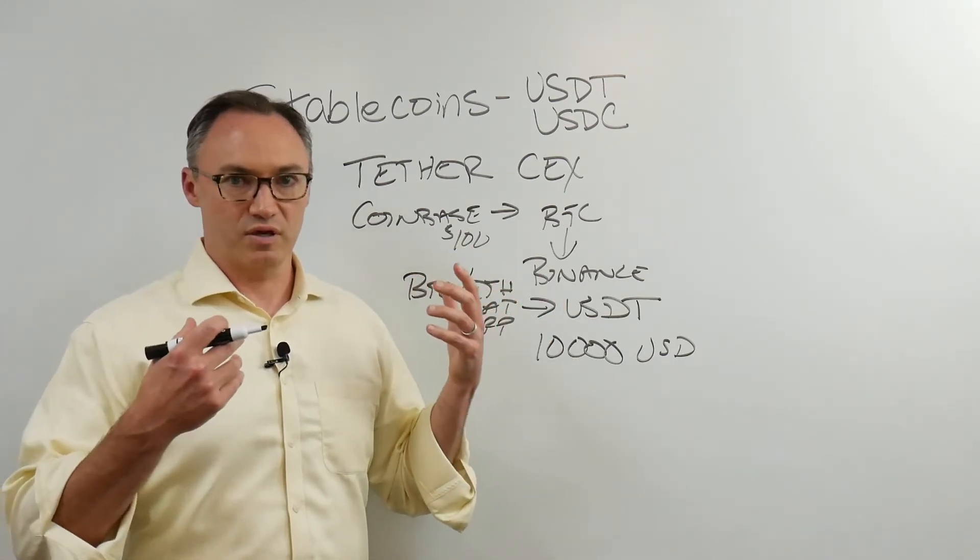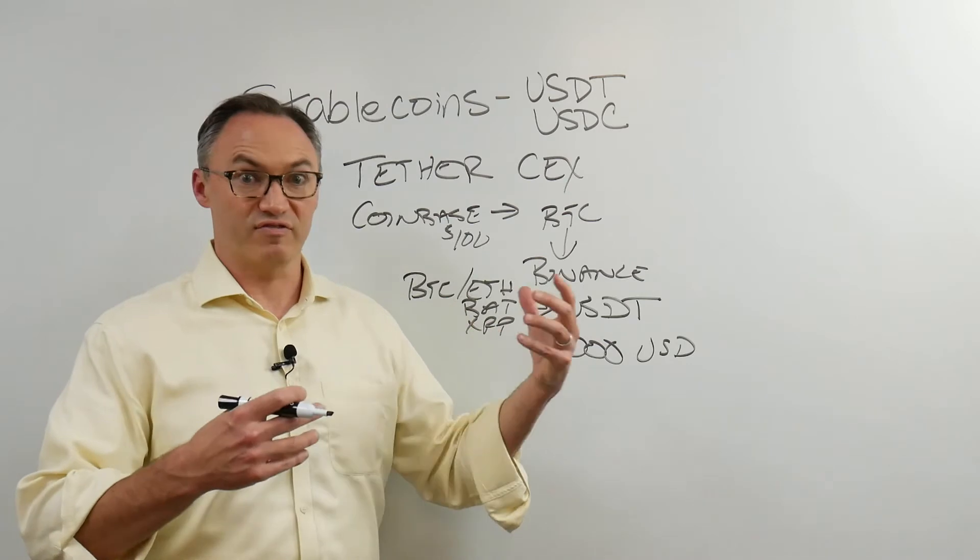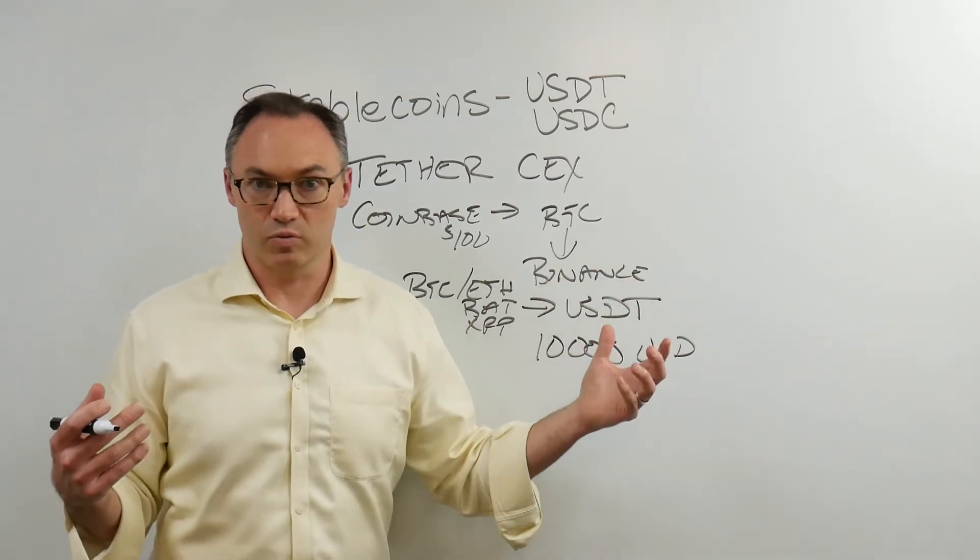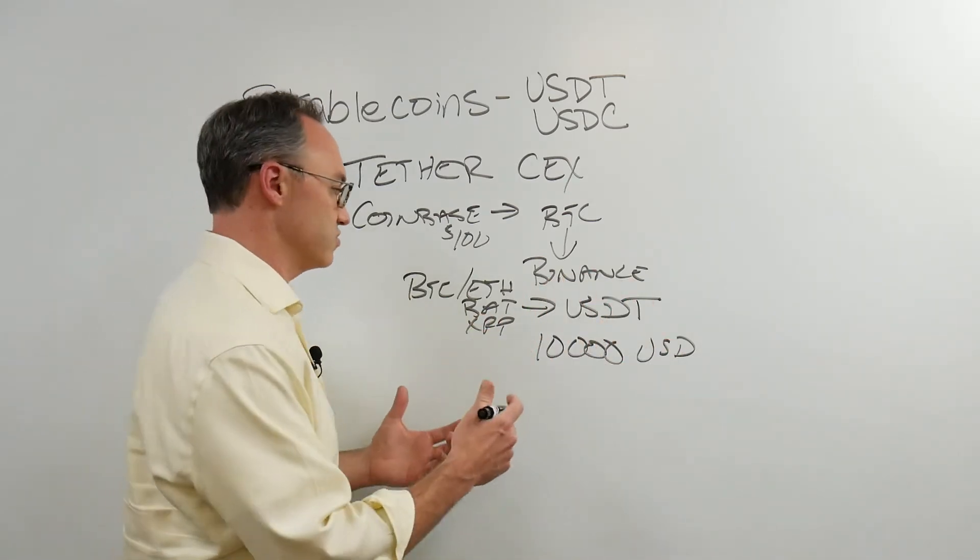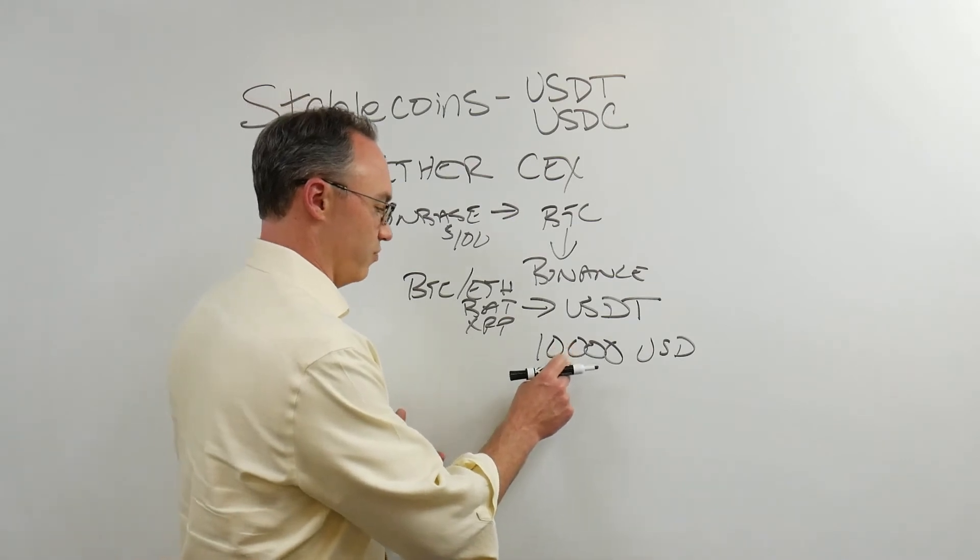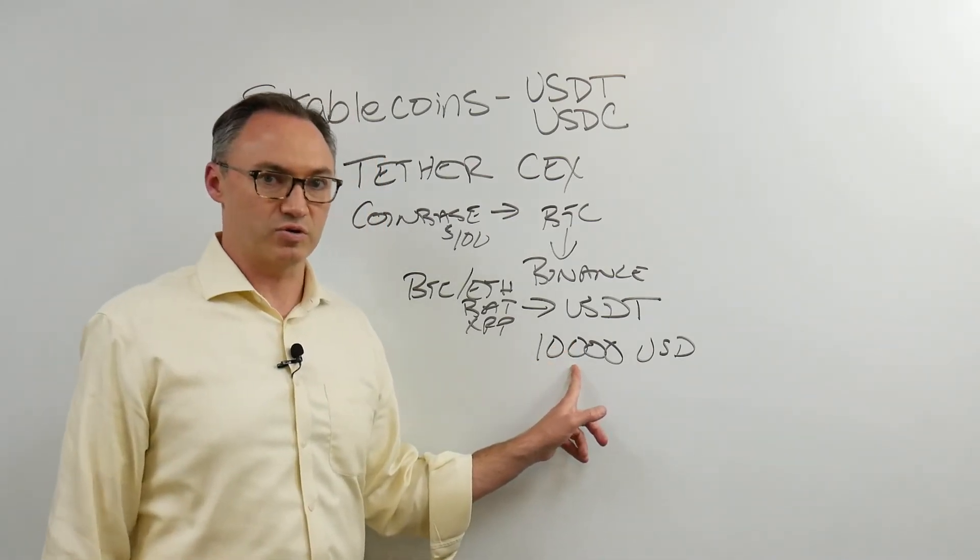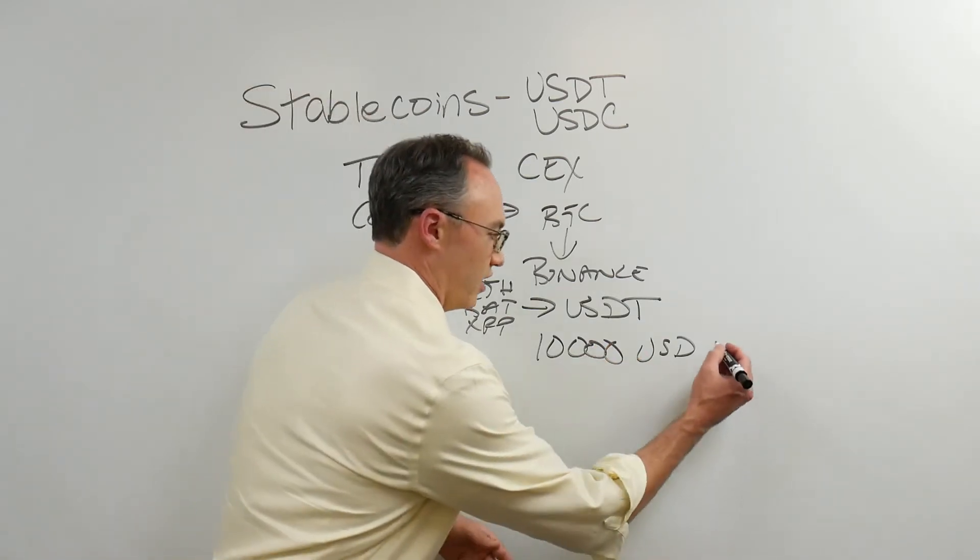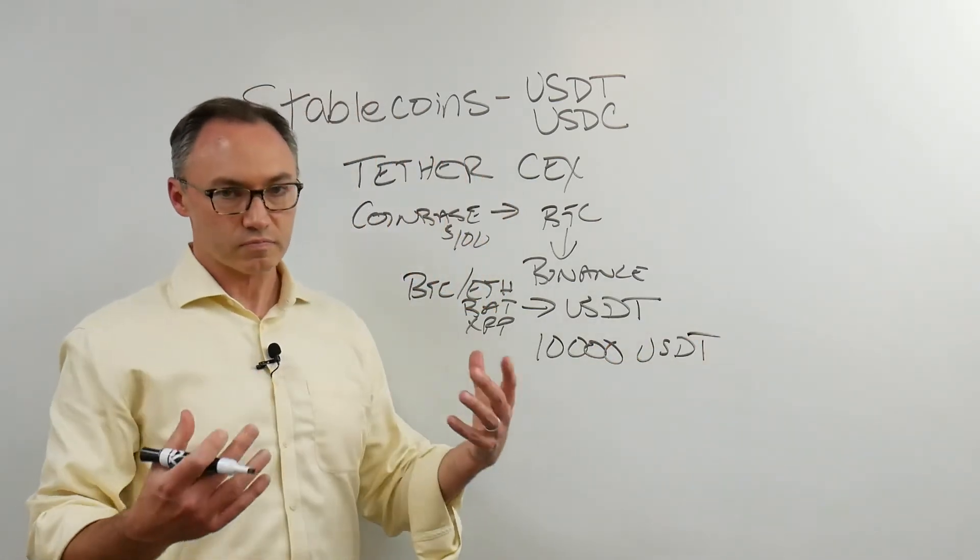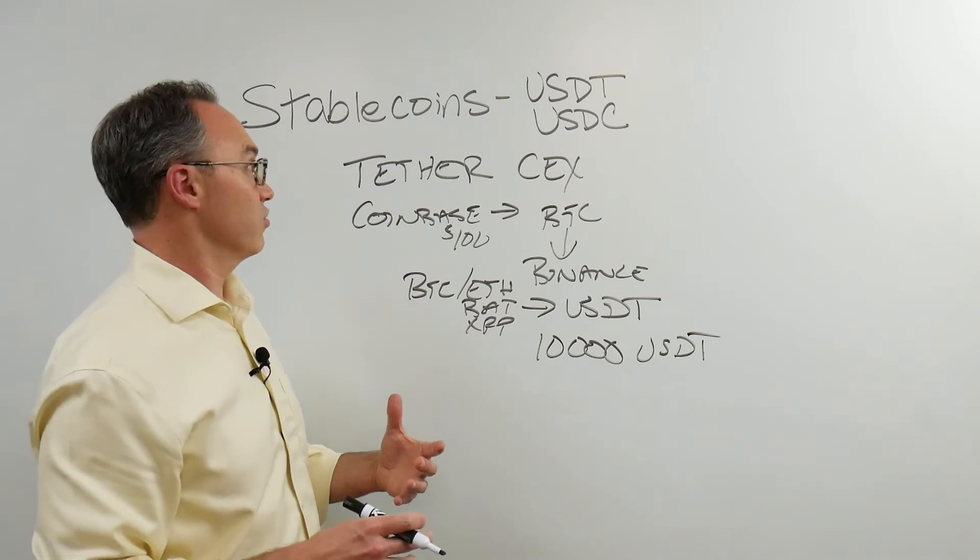So it's really just, it's worth a dollar because we have to have faith that these exchanges are going to keep it worth a dollar. And they're going to honor the price. They're going to honor that if something outside of the exchange is worth $10,000, if Bitcoin's worth $10,000, it's worth $10,000 Tether. So that's a bit about how Tether works.